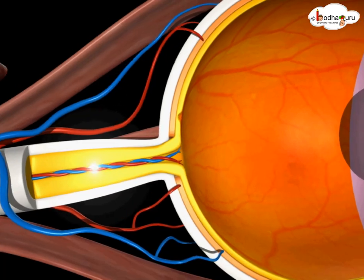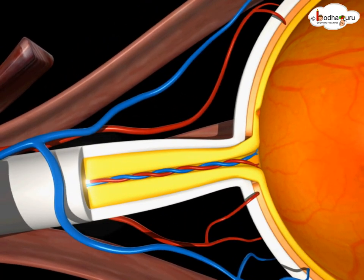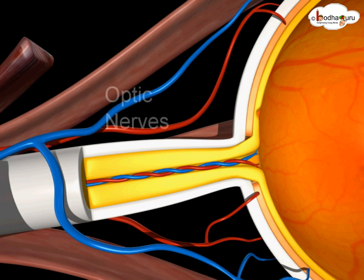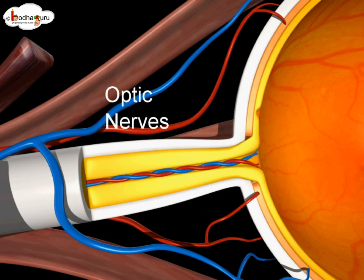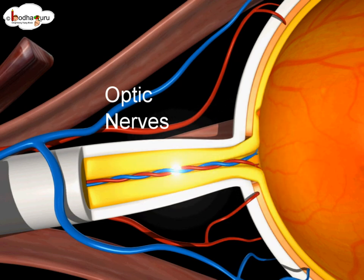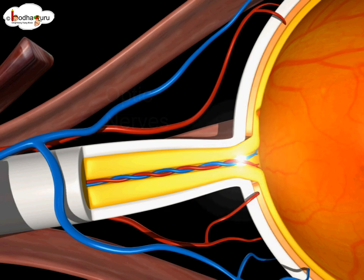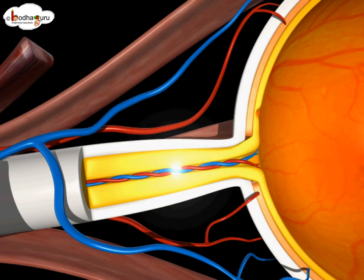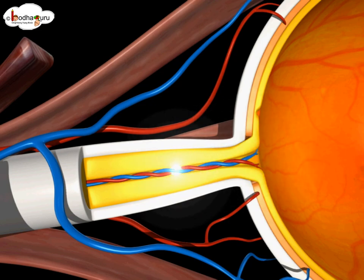Light-sensitive cells convert light energy into electrical signals, and the signals are relayed to the brain through the optic nerves. The brain interprets the signals and forms the image we see.